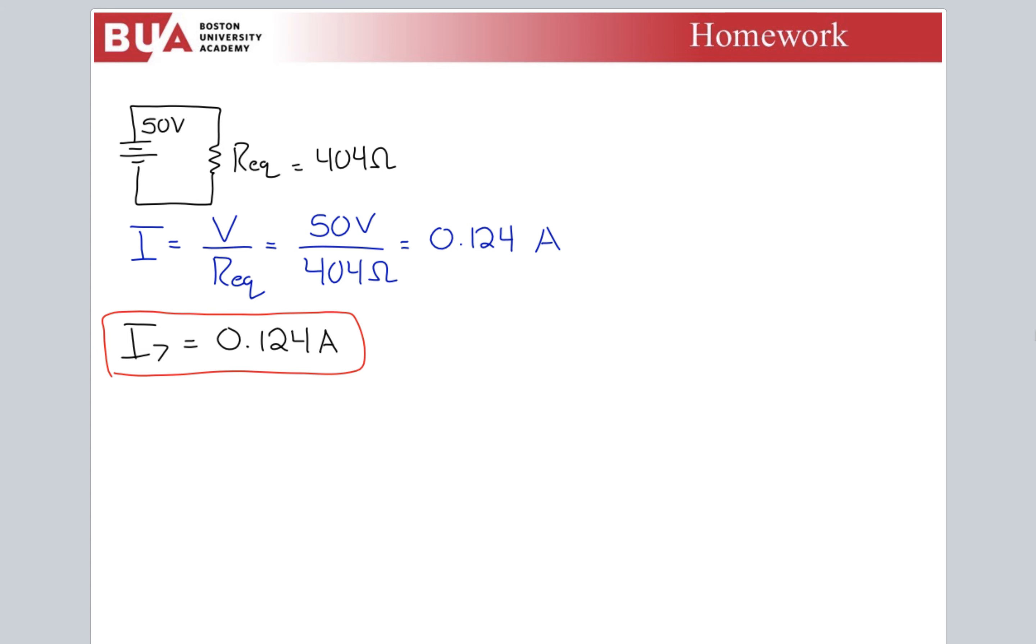Now it's dead simple because now we can find the voltage across seven, which is just 0.124 times 125 is 15.5 volts. That is V7. All good. So, still talking about circuits, but let's jump to now talking about electric power.